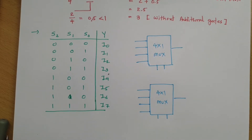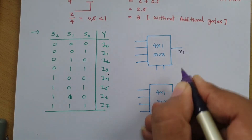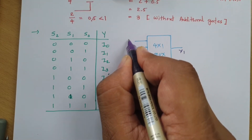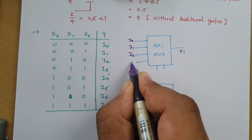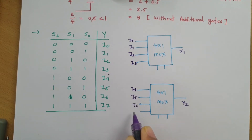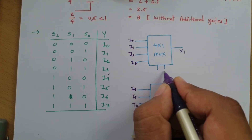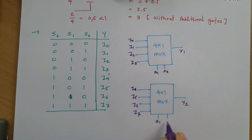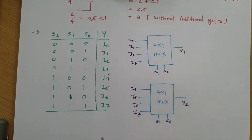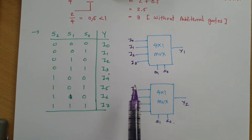Let us give naming to each terminal. Let us say output of the first mux is Y1 and output of the second is Y2. The first mux receives inputs I0, I1, I2, I3, and the second mux receives inputs I4, I5, I6, I7. Both mux share S0 and S1 selection lines. The output will come based on these selection lines. So how to separate output from I0 to I3 versus I4 to I7?